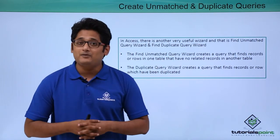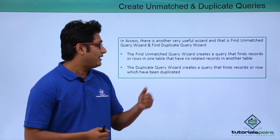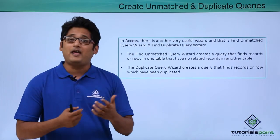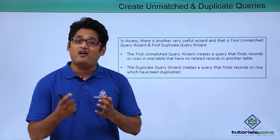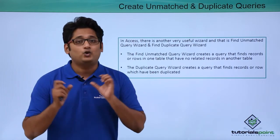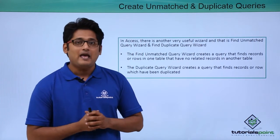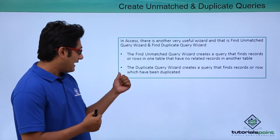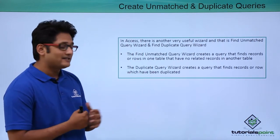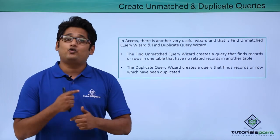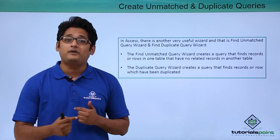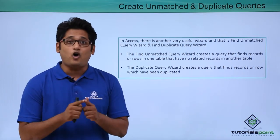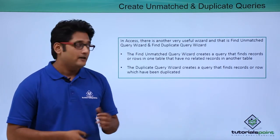As the name suggests, the first one — unmatched queries — will help you find the unrelated records between two tables. The duplicate query, as the name suggests, will help you find the duplicate records in a particular table or in two different tables.